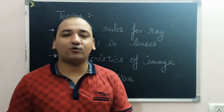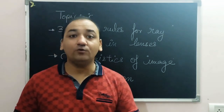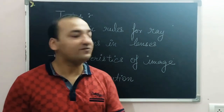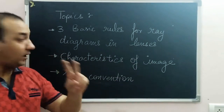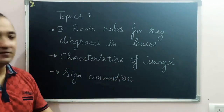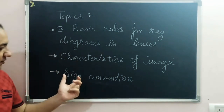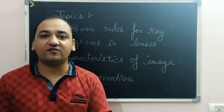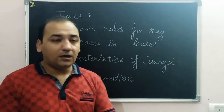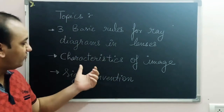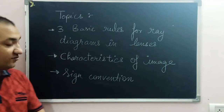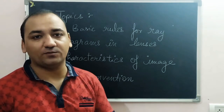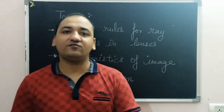Hello everyone and welcome back to Backbenchers Academy by Rohit Verma. Today we are going to discuss three topics: number one, the three basic fundamental rules for ray diagrams in lenses; number two, the characteristics of an image formed by a lens; and number three, the sign conventions associated with lenses. These three topics will be covered in today's class.